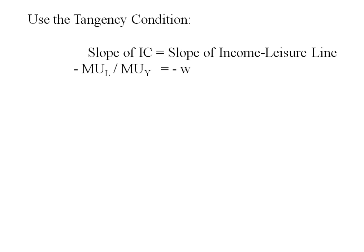Let's use the tangency condition to find the optimal bundle. We'll look at the slope of the indifference curve and the slope of the income leisure line. The slope of the indifference curve will be the negative of the marginal utility of leisure over the marginal utility of the composite good. And we just deduce the slope of the income leisure line as negative W.